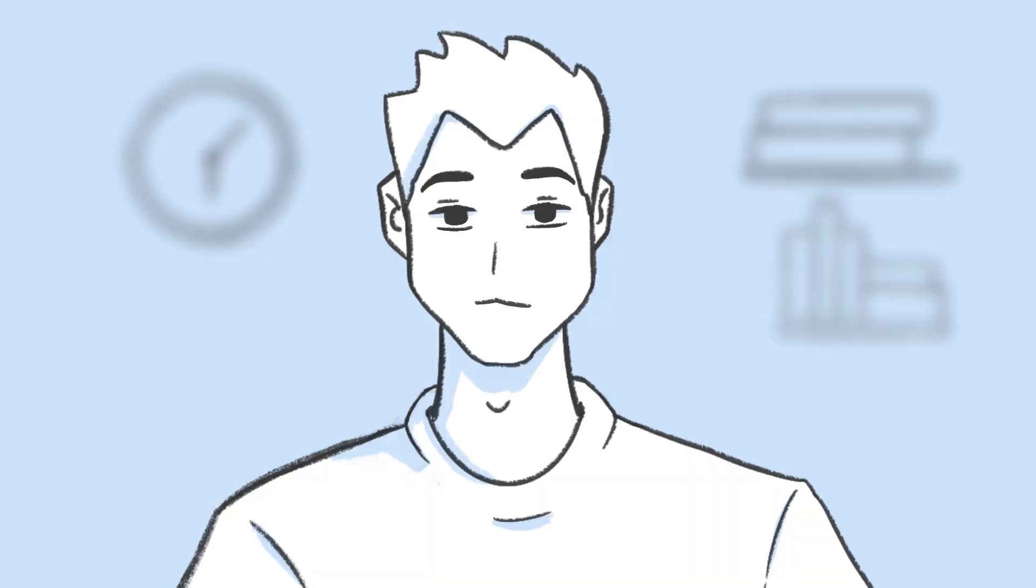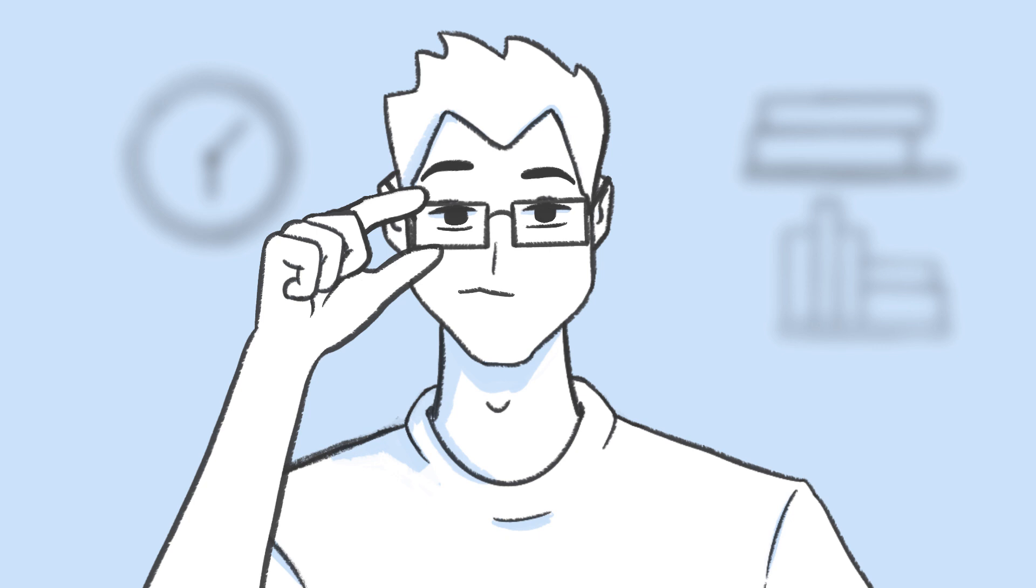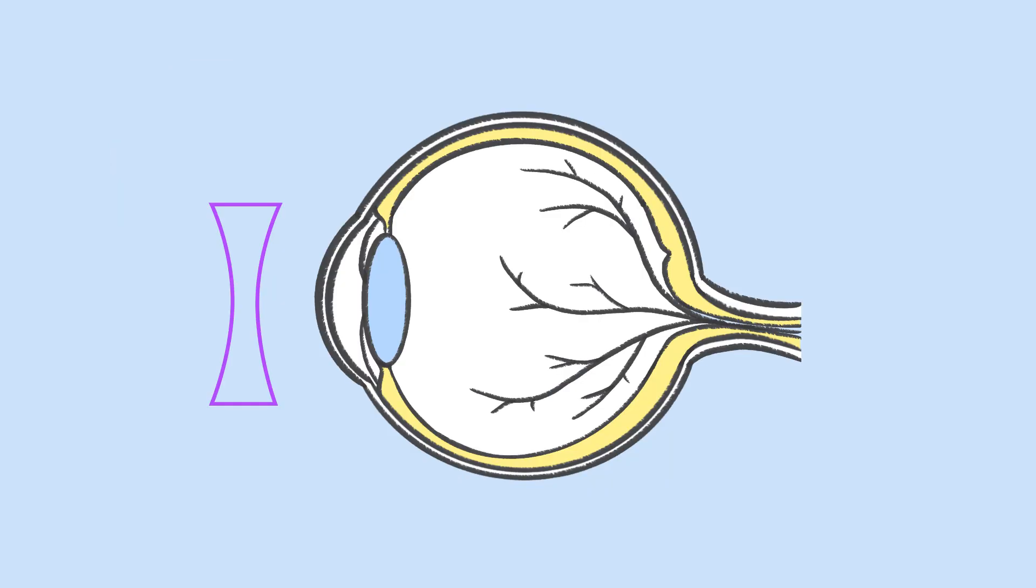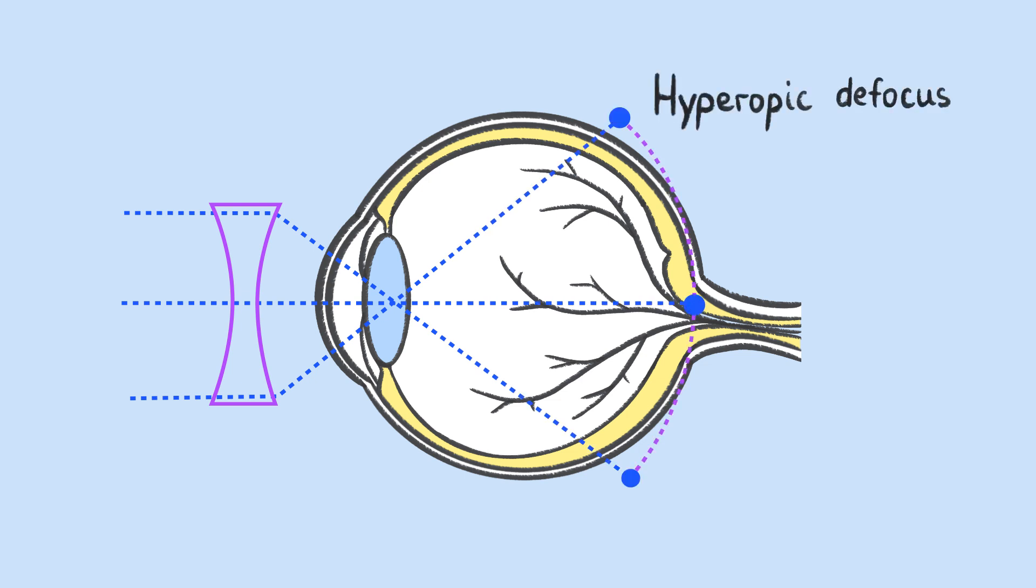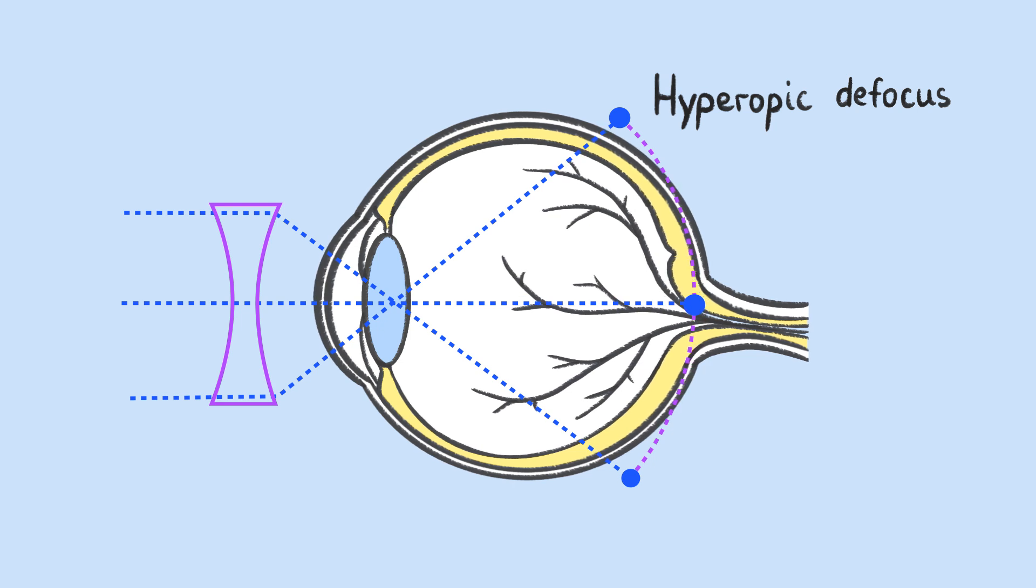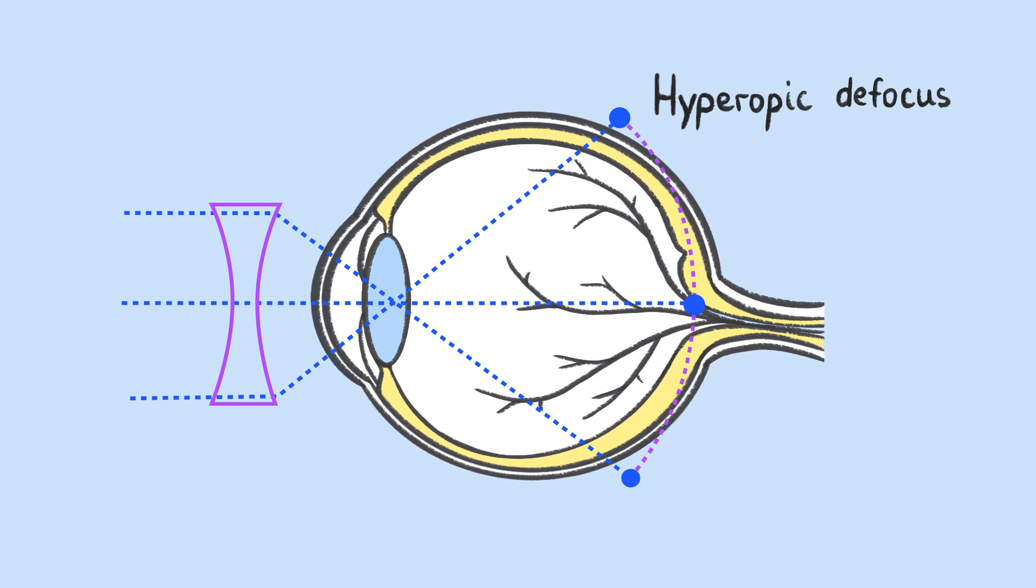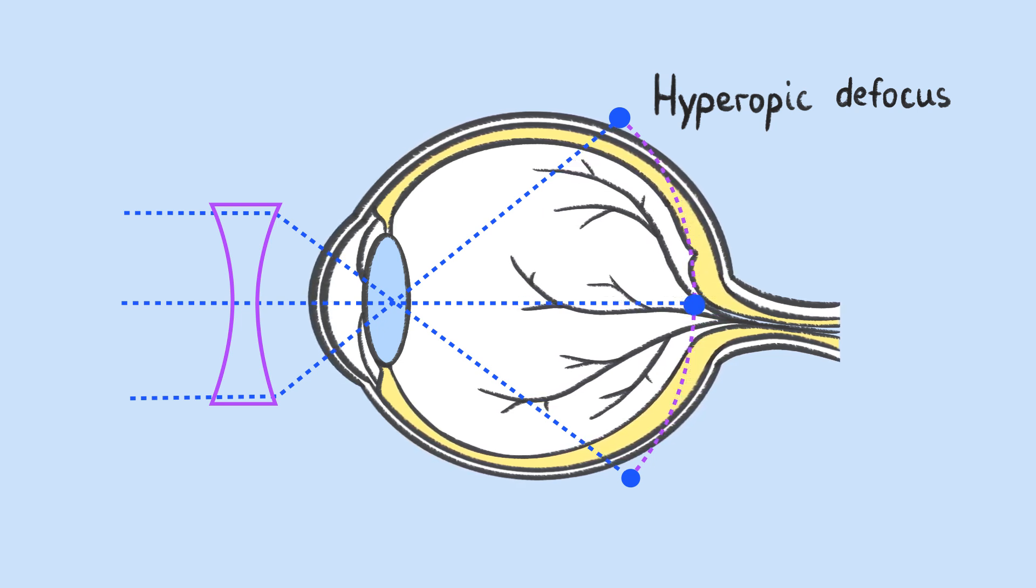One reason light might focus behind the retina is your glasses. Glasses to control nearsightedness will cause some of the light to focus behind the retina, called hyperopic defocus. This sends a signal to your eyeballs to increase axial length, elongating the eyeball to correct what it perceives as being too short.